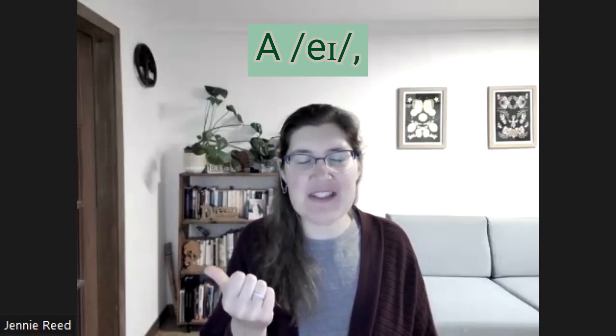Did you know that the first letter of the alphabet has three possible pronunciations? When we're saying the alphabet, we say 'a' /eɪ/. When introducing this sound to a young child, we talk about 'a' /æ/ — often in books you'll see 'a for apple.' If we're using it in a sentence and it's unstressed, it'll be 'a' /ə/.